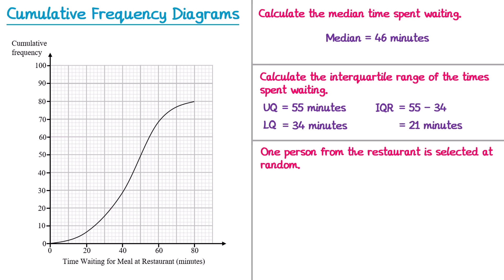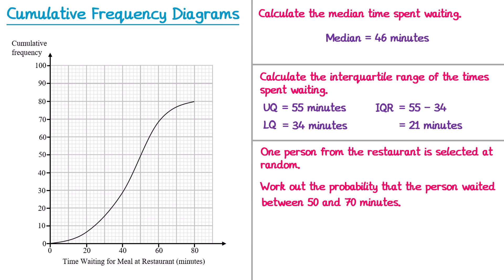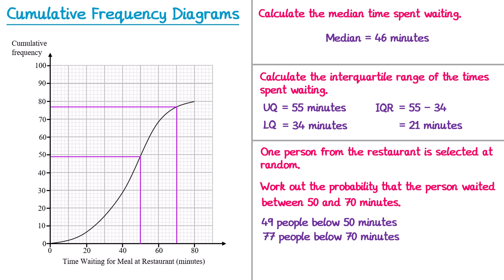For one final question, one person from the restaurant is selected at random and we need to work out the probability that the person waited between 50 and 70 minutes. We locate 50 on the time axis, go up to the diagram and across — 50 corresponds to a cumulative frequency of 49, meaning 49 people waited up to 50 minutes. Then for 70, we go up to the curve and across and read off 77 — so 77 people waited up to 70 minutes. Subtracting: 77 minus 49 gives 28 people between 50 and 70 minutes. As a probability that's 28 over 80.